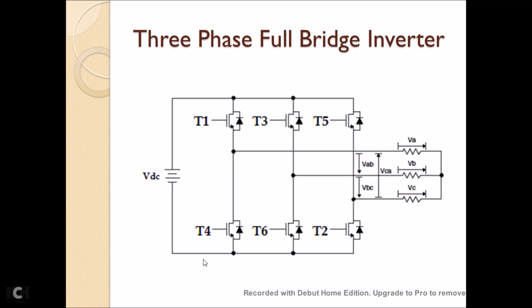A three-phase full-bridge inverter is shown in this picture. It consists of three legs, and in each leg there are two IGBTs connected in series. The input terminals of the inverter are connected to a DC voltage source, and the output terminal is connected to a three-phase R load. Let us see how to simulate this using MATLAB Simulink.